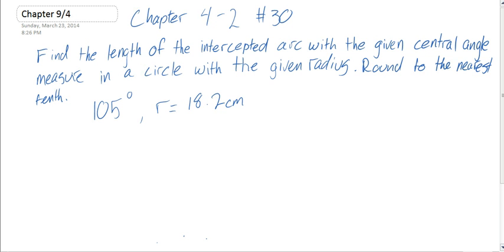I'm going to show you how to solve number 30 from Chapter 4, Section 2. The question asks to find the length of the intercepted arc with the given central angle measure in a circle with the given radius. Round to the nearest tenth.